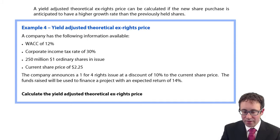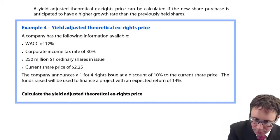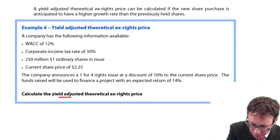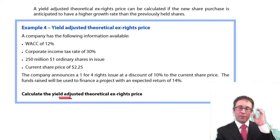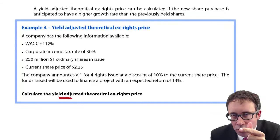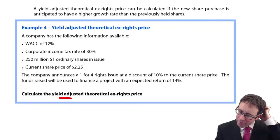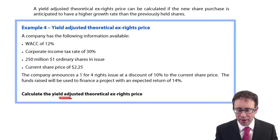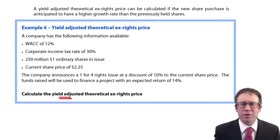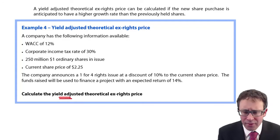The example says calculate the yield-adjusted theoretical ex-rights price. So it's important that you read these questions. Don't work out the theoretical ex-rights price, it's the yield-adjusted one. Be careful. So what have we got? Well, it says a company has the following information: a WACC of 12%. Why is that relevant?